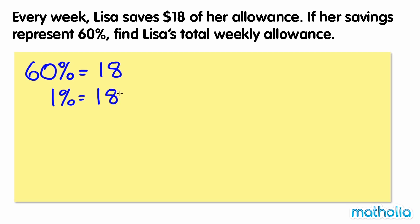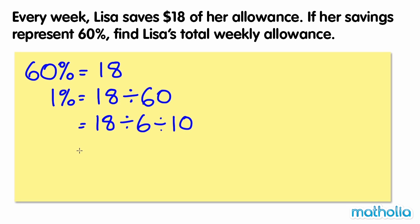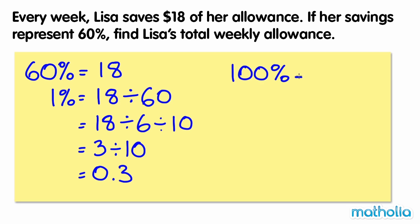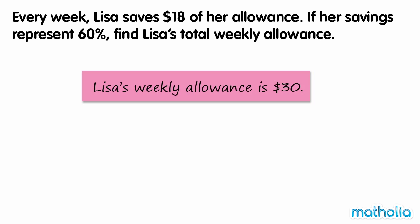So 1% equals 18 divided by 60, which is 0.3 or 30 cents. 100% is 100 times 0.3, so Lisa's weekly allowance is $30.